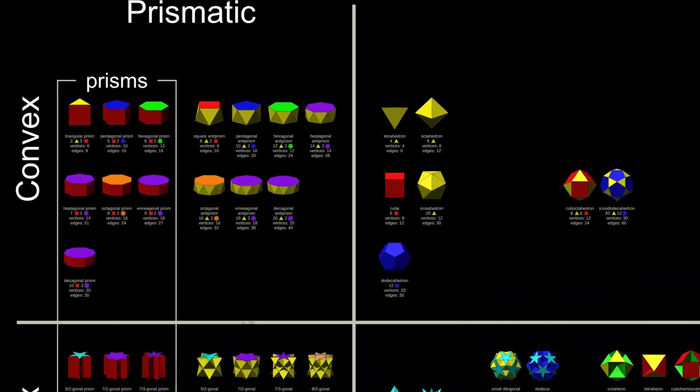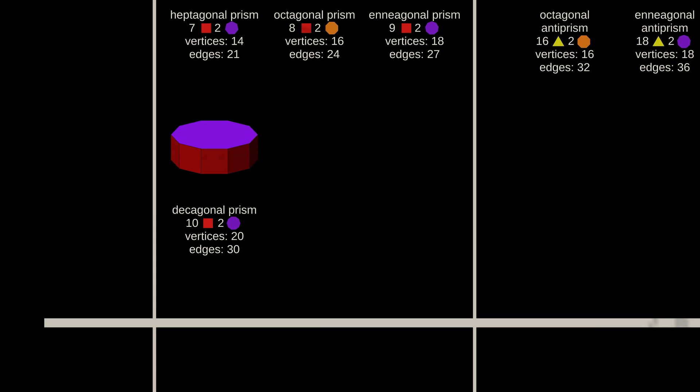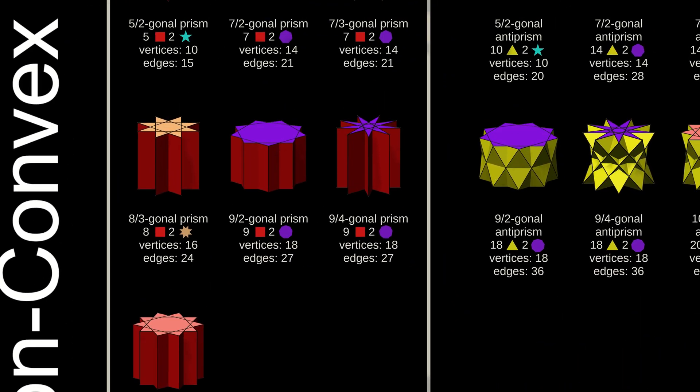The prismatic shapes are the infinite families of prisms and anti-prisms. The convex prisms are simple shapes, but their non-convex cousins are more complex.